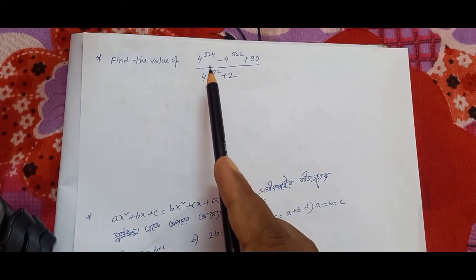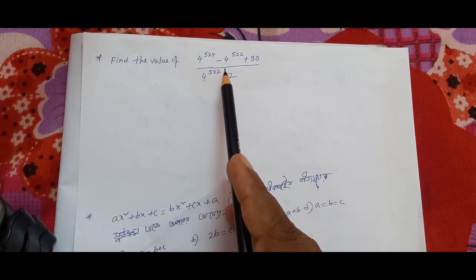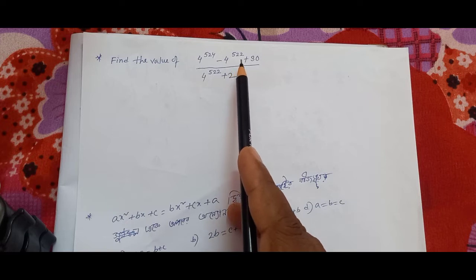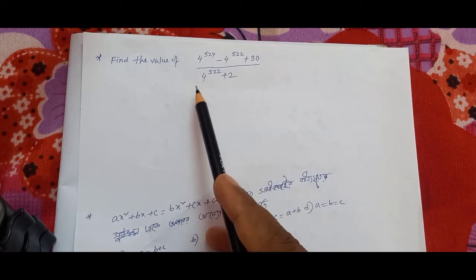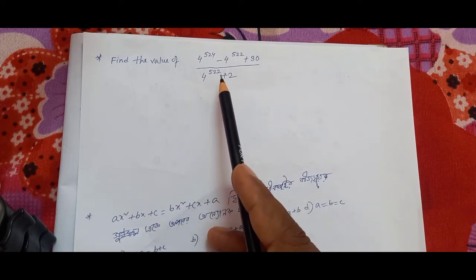Find the value of 4 to the power 5 to 4 minus 4 to the power 5 to 2 plus 30 by 4 to the power 5 to 2 plus 2.